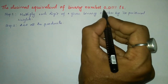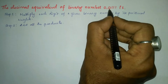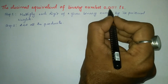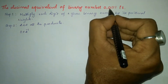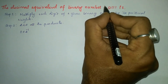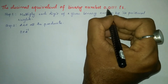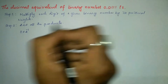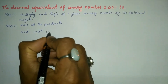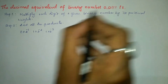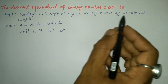Let us consider the given binary number 0.0111. After the decimal point we start counting positional weights from the left. The first bit is 0, multiplied by 2 to the power minus 1. The next bit is 1, multiplied by 2 to the power minus 2. The next bit is 1 multiplied by 2 to the power minus 3, and the last bit is 1 multiplied by 2 to the power minus 4.